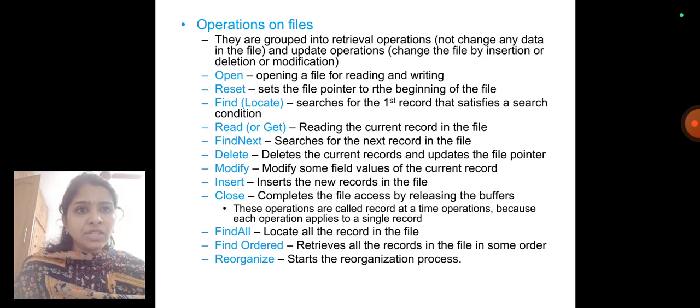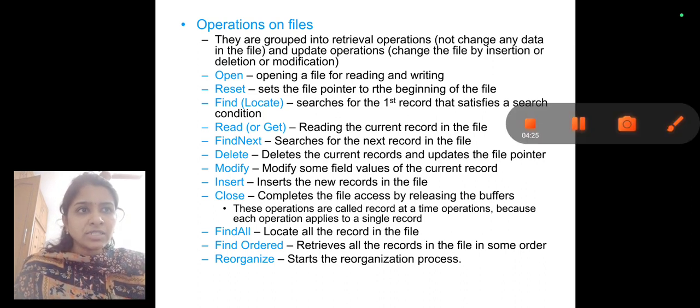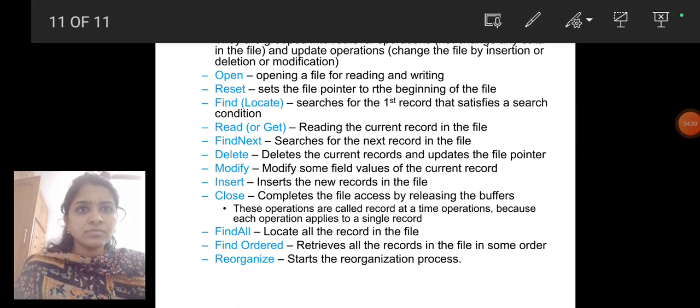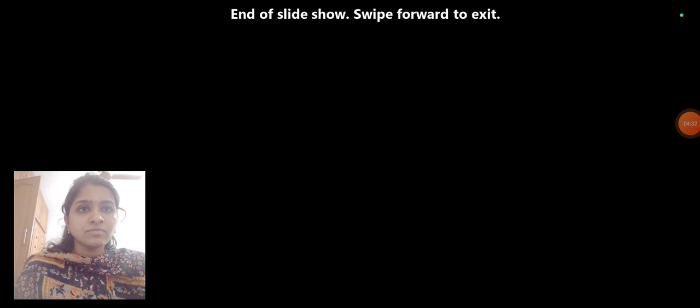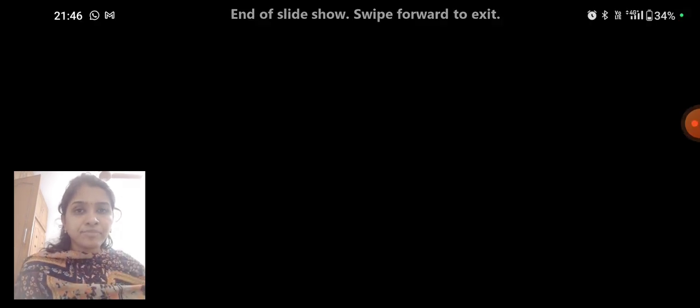Find or locate all the records in the file. Find Order: retrieves all the records in the file in some order. Reorganize: starts the organization process. And thus, file organization.